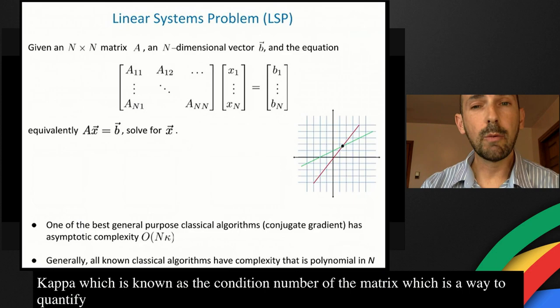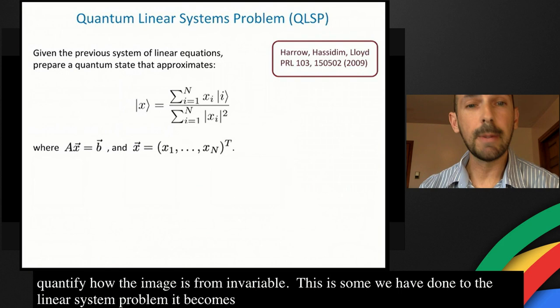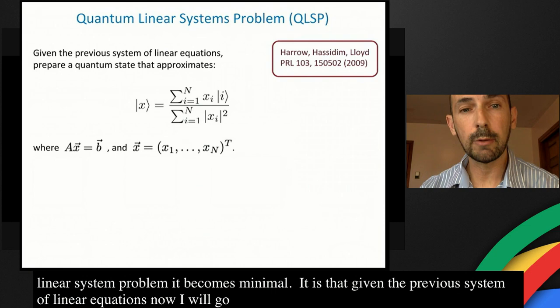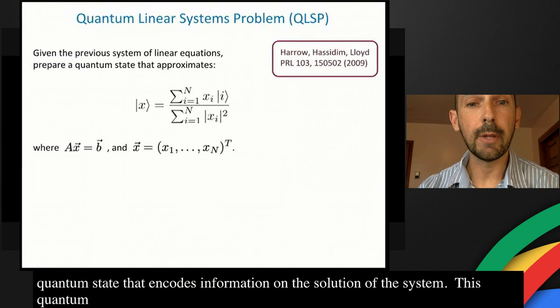Classical algorithms for this problem typically take time polynomial in the dimension of the matrix. One of the best known general-purpose classical algorithms, conjugate gradient, scales linearly in N and linearly in kappa — the condition number of the matrix — which quantifies how far a matrix is from being invertible. The quantum linear system problem modifies this: our goal is not solving the system directly, but preparing a quantum state that encodes information about the solution. This quantum state x is proportional to the solution vector of Ax = B.